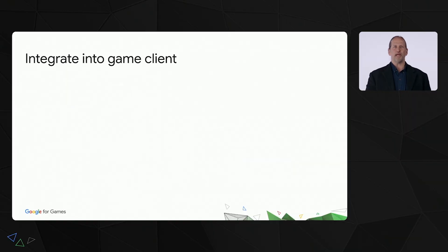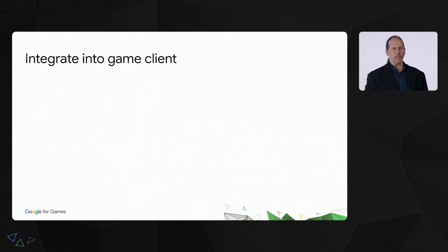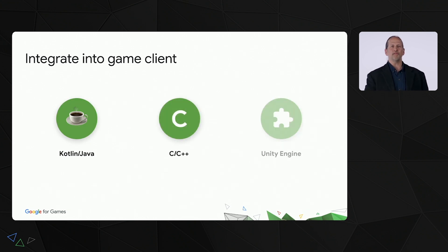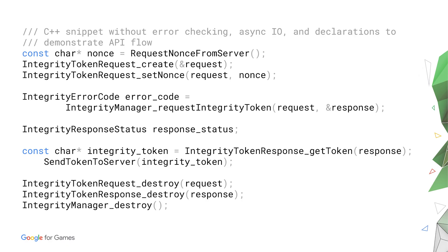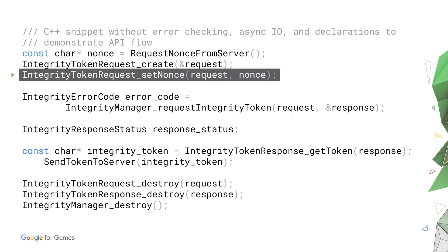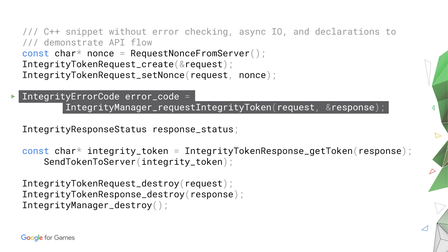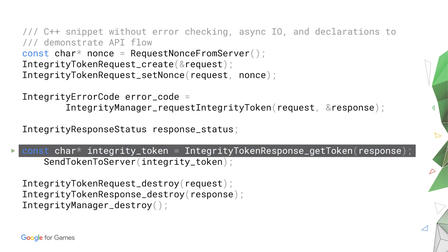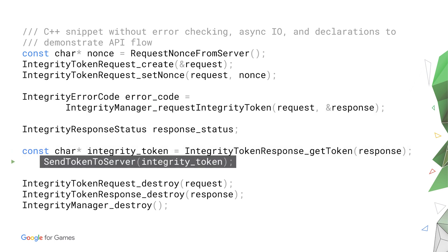Then you can start integrating the Play Integrity API into your game client. We provide the API in multiple forms to best suit your environment, including Kotlin and Java, C, and a plug-in for the Unity engine. The basic API flow — shown here in highly abridged form with the C API — involves creating the request, setting a nonce that will typically come from your server, requesting the integrity token, receiving the signed token back, and passing that signed token off to your server to be verified.